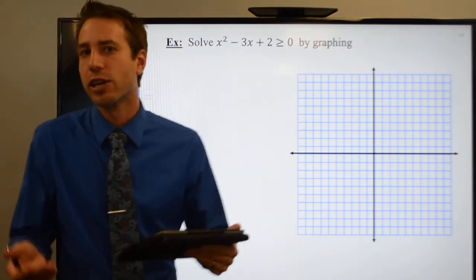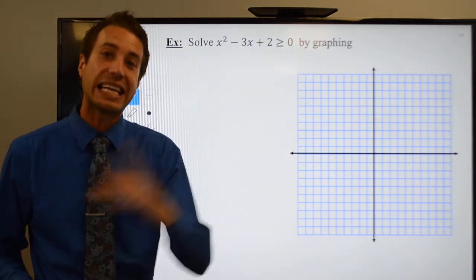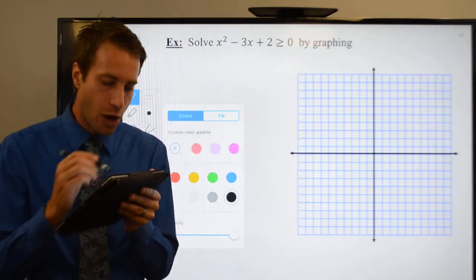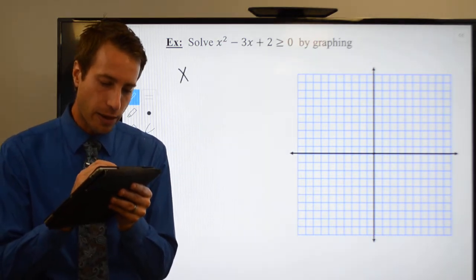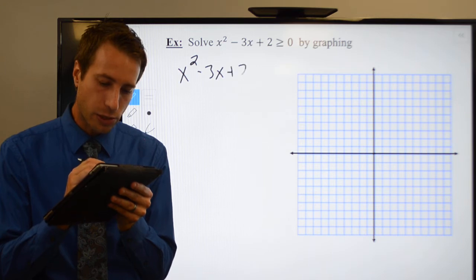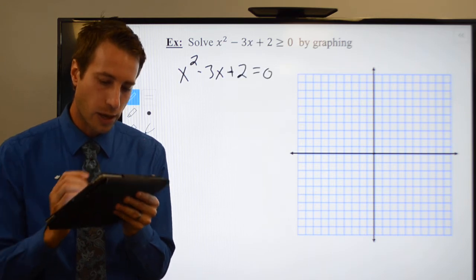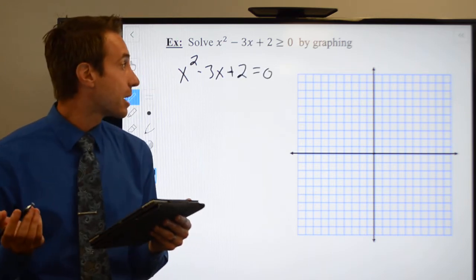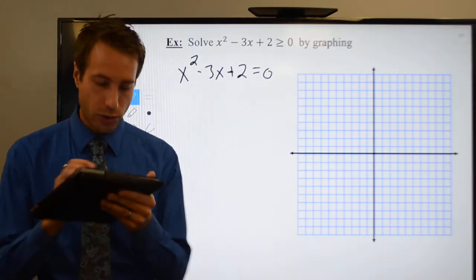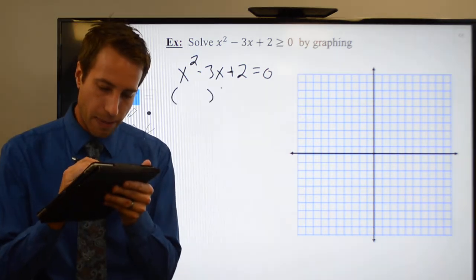In order to do that, we're going to solve the related quadratic equation, which means that I do x squared minus 3x plus 2 equals 0. I believe I'm going to be able to factor this as a general trinomial. I'm going to set up my binomials.